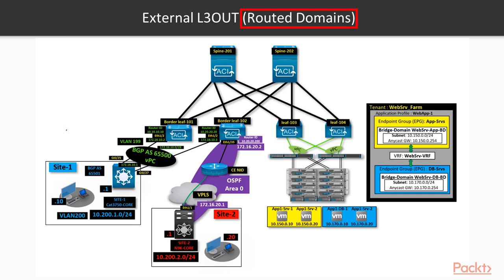Don't be scared about this topology. It might look very complex, but I am going to break it into two separate sections. The first one: we're going to configure an external L3-Out to peer with BGP to site number one. We got site number one, and we are going to configure BGP between my two border leaves — called border leaves because they connect to an external network.